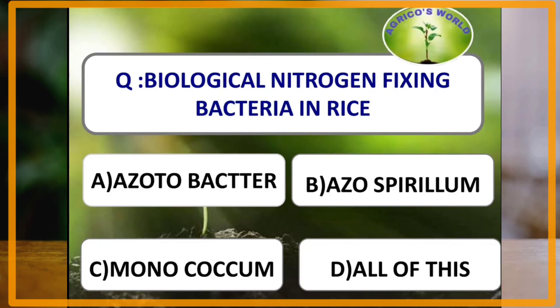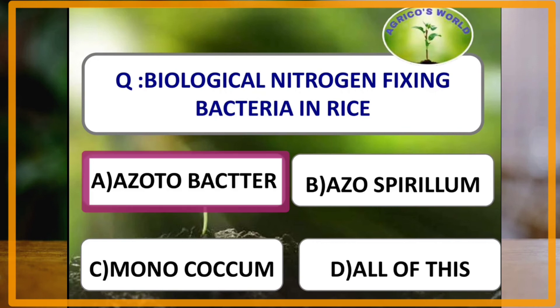The biological nitrogen-fixing bacteria in rice is Azotobacter, which is a non-symbiotic nitrogen-fixing bacteria. Azospirillum can also be used in most monocots. Azolla along with blue-green algae is used for biological nitrogen fixation in a symbiotic form, while Azotobacter fixes nitrogen in non-symbiotic form.